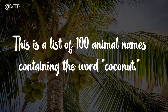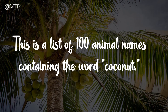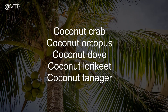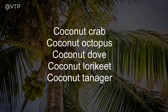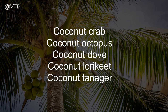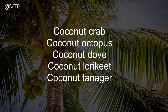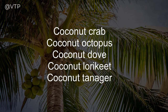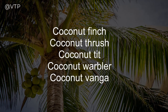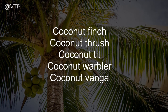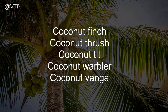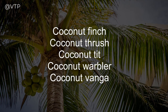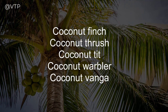This is a list of 100 animal names containing the word coconut. Coconut crab, coconut octopus, coconut dove, coconut lorikeet, coconut tanager, coconut finch, coconut thrush, coconut tit, coconut warbler, coconut venga.